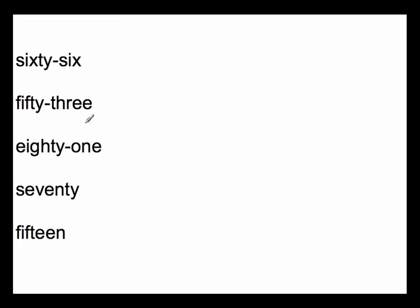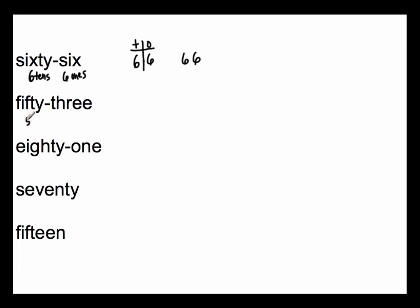Now we're going to do the exact opposite — going from words to the actual numbers themselves. We have sixty-six: sixty means six tens, and six means six ones. That tells me where these numbers are placed — that's the ones place, that's the tens place. I have a six in the ones place and a six in the tens place, so this number in standard form is 66. Next, fifty-three: fifty means five tens, and three means three ones. The number in standard form is 53.